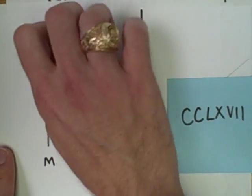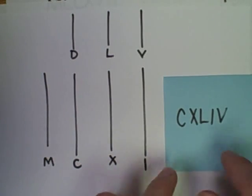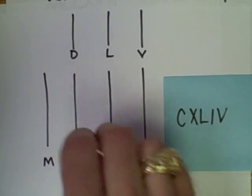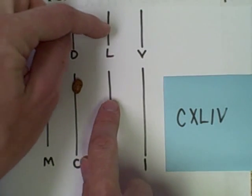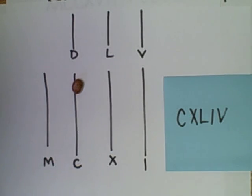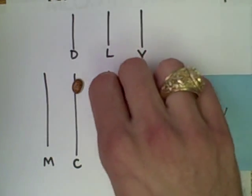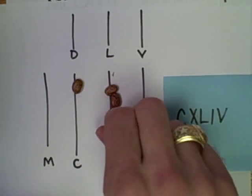Where you do need to be careful is if your numeral has subtractive pairs, such as this here. The C's not a problem. XL, I don't want to put a bead in each place here because that would mean 60, but XL actually means 40. So what I'll do is I'll put four beans on the X line.